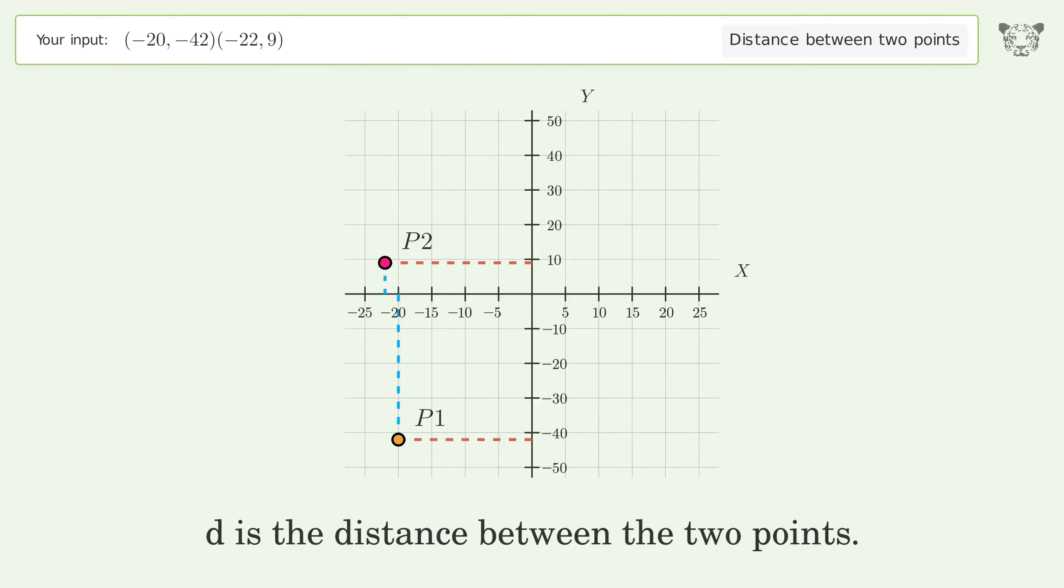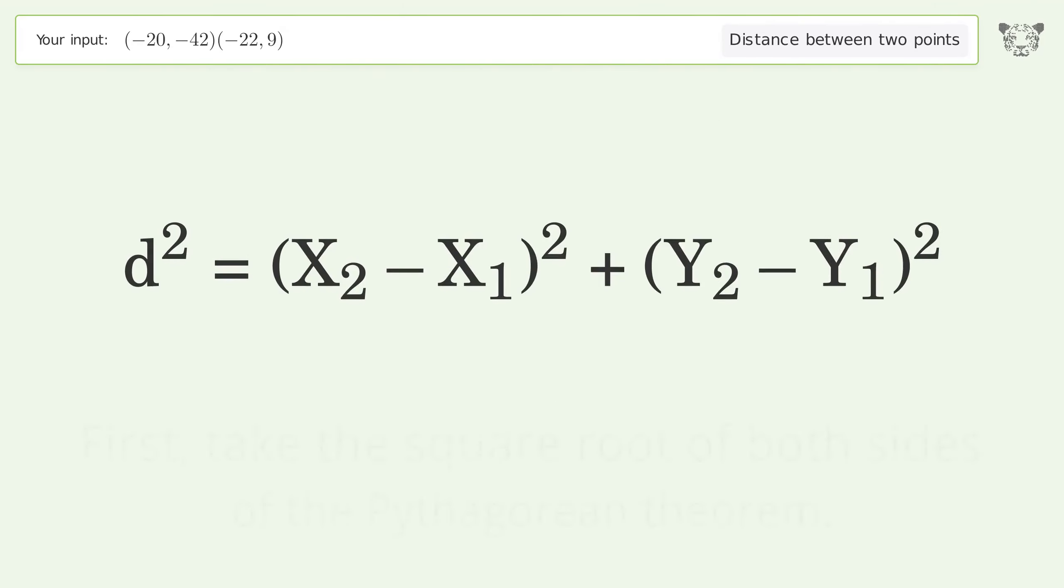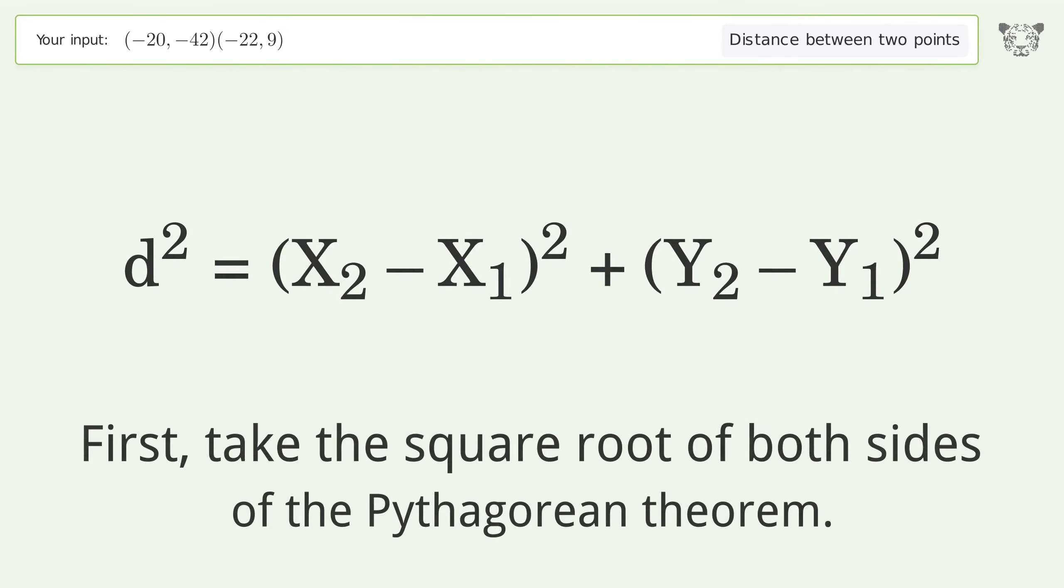d is the distance between the two points. First, take the square root of both sides of the Pythagorean theorem. This gives us the distance formula.